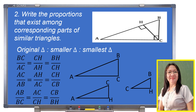The last possibility: AB (the hypotenuse) to BC (the shorter leg) equals AC to CH, which equals CB to BH.